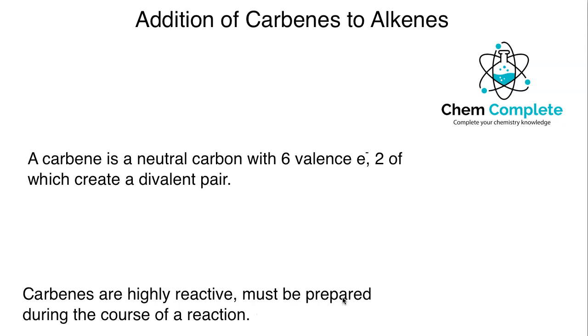So, what is a carbene? A carbene is a neutral carbon with six valence electrons, and two of those are going to create a divalent pair. That carbon will usually have two other groups, so R could be anything here. The prime marker just means that these two could be separate from one another. They don't have to be identical, although sometimes they will be. And we would have a pair of electrons up here on this carbon. So, this right here is a carbene.